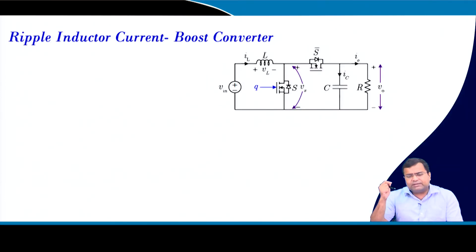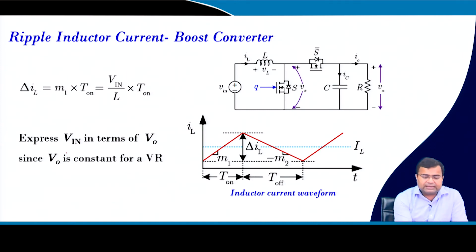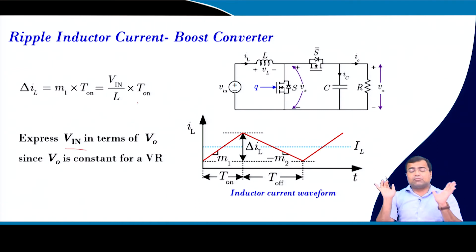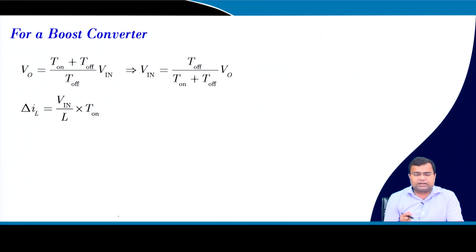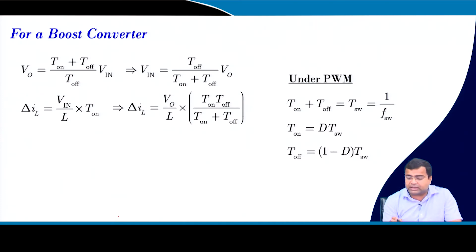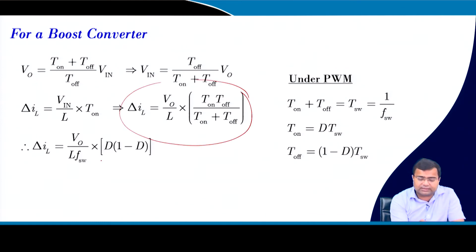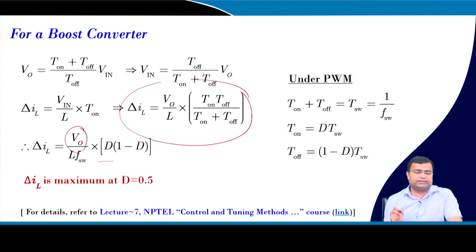For the boost converter, the inductor current ripple is again a function of on-state time and input voltage. Under constant on-time it is maximum at maximum input voltage. Under pulse width modulation, the expression becomes proportional to D(1−D), so the inductor current ripple is maximum at 50% duty cycle — meaning when output voltage is twice the input voltage — for a fixed output voltage regulator. This is discussed in lecture 7.